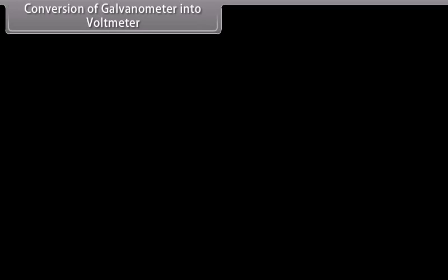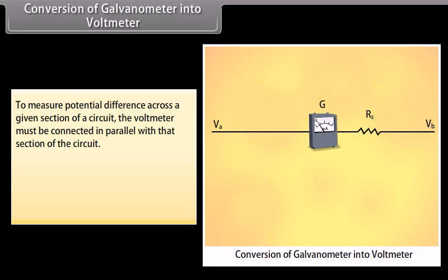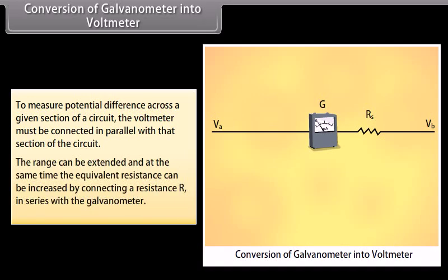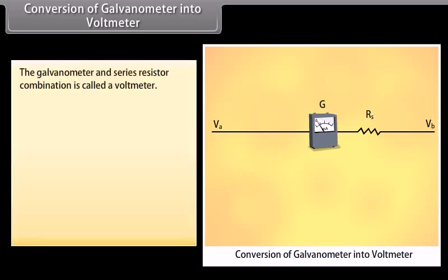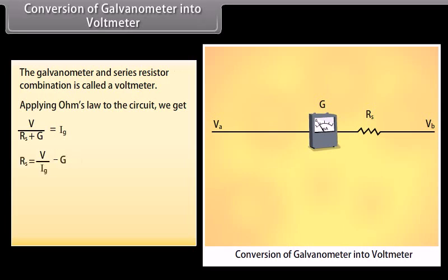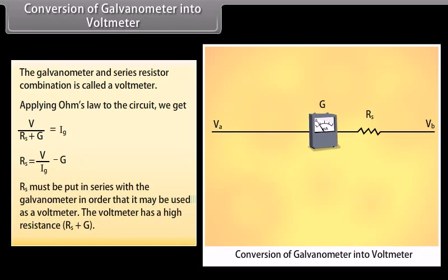Conversion of galvanometer into voltmeter: to measure potential difference, the voltmeter must be connected in parallel with that section of the circuit. The range can be extended and equivalent resistance increased by connecting a resistance Rs in series with the galvanometer. This combination is called a voltmeter. Applying Ohm's law: V/(Rs + G) = Ig, giving Rs = V/Ig − G. Rs must be put in series with the galvanometer, and the voltmeter has a high resistance of Rs + G.